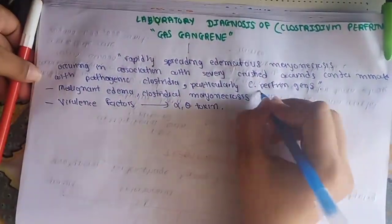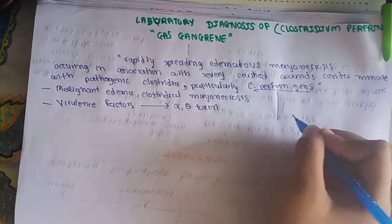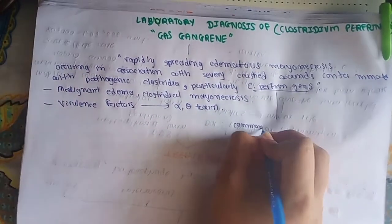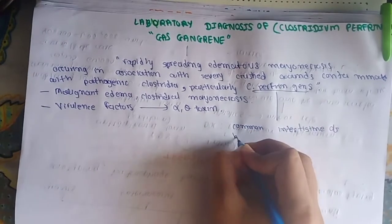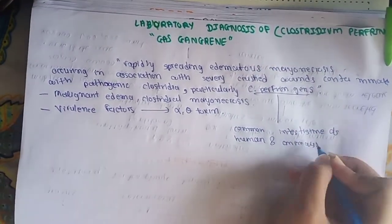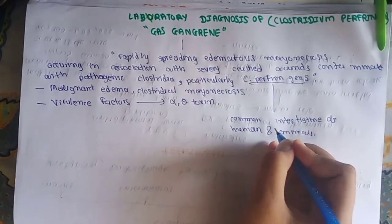Clostridium perfringens, C. perfringens, is commensal in large intestine of human beings and animals. They are also saprophytic in soil, dust, and air.